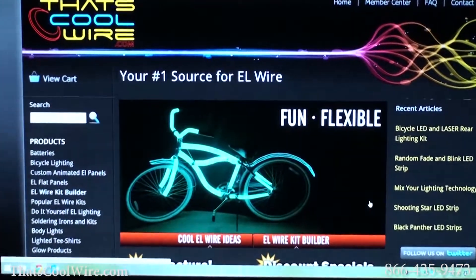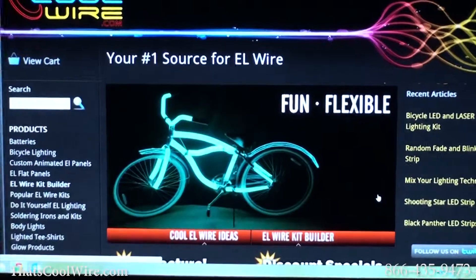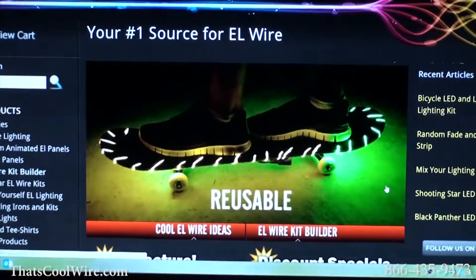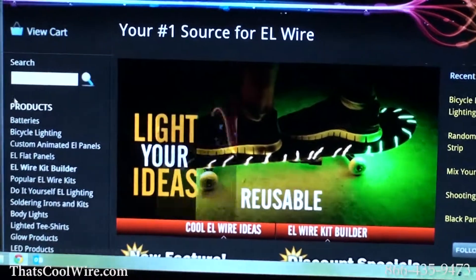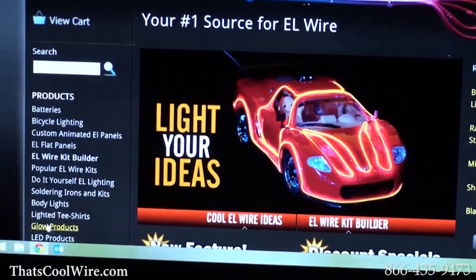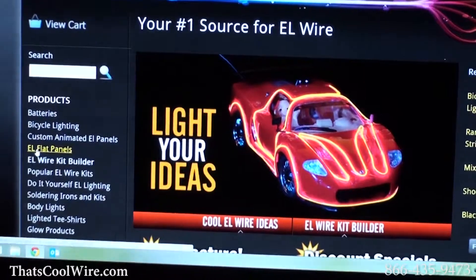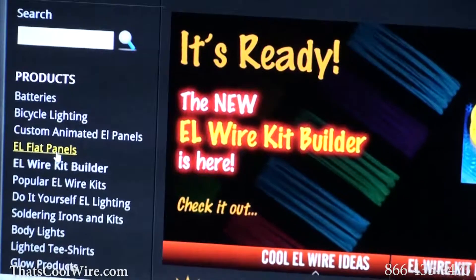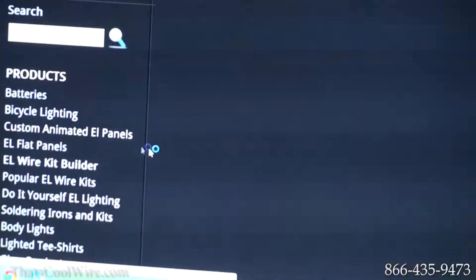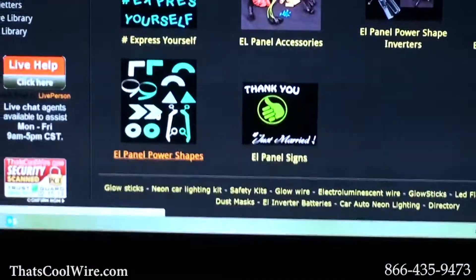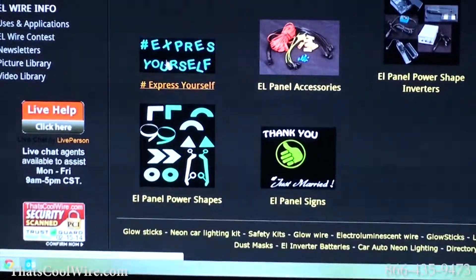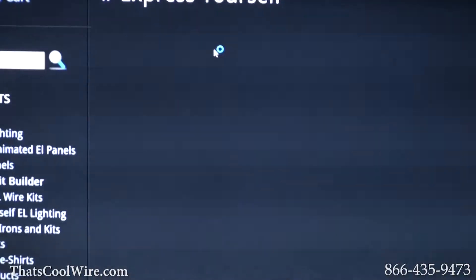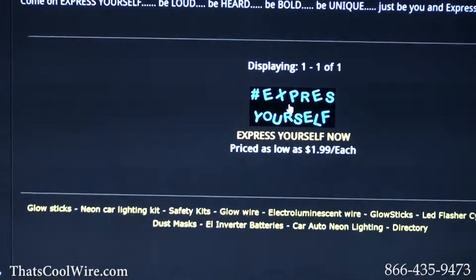So now we're going to show you how to order the splitter so you can make your combination up. There's three different ways. I'm going to show you what I believe is the absolute easiest and best way. So on the left hand side where all the links are, you're going to click on EL Flat Panels. Again, you're just going to go to the left side, click on EL Flat Panels. When this page loads you're going to find Express Yourself. Click on that and just click on it one more time.